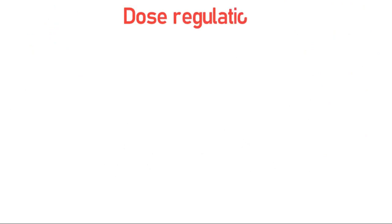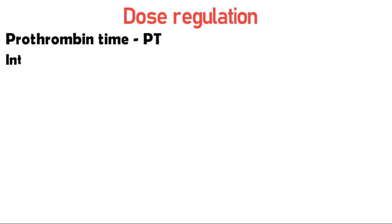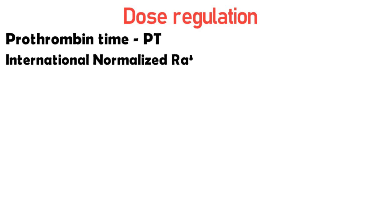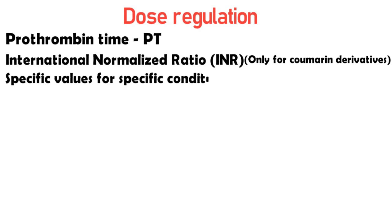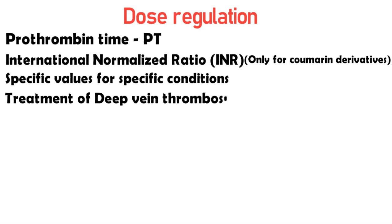Dose regulation of warfarin is very important and it is specific for specific conditions. It is done mainly by calculating the prothrombin time of the patient, and from the prothrombin time, specific values known as international normalized ratios — abbreviated as INR values — are calculated. INR values are applicable only for coumarin derivatives or anticoagulants. INR values are target values specific to each disease condition which are to be maintained to avoid bleeding. For example, for treatment of deep vein thrombosis, a target INR of 2 to 3 is to be maintained.